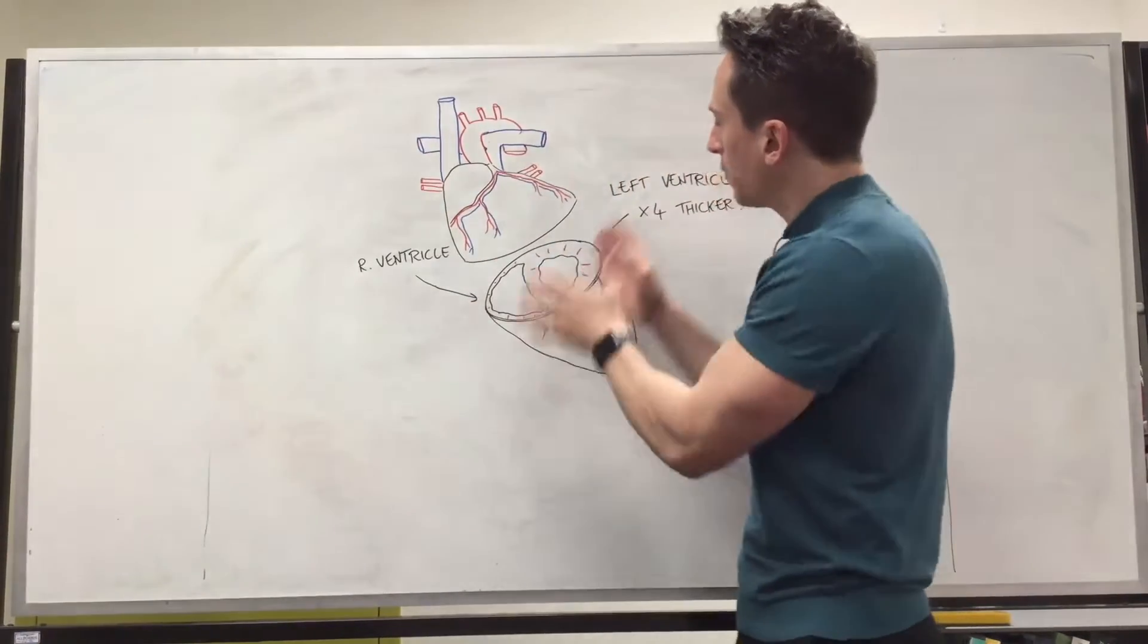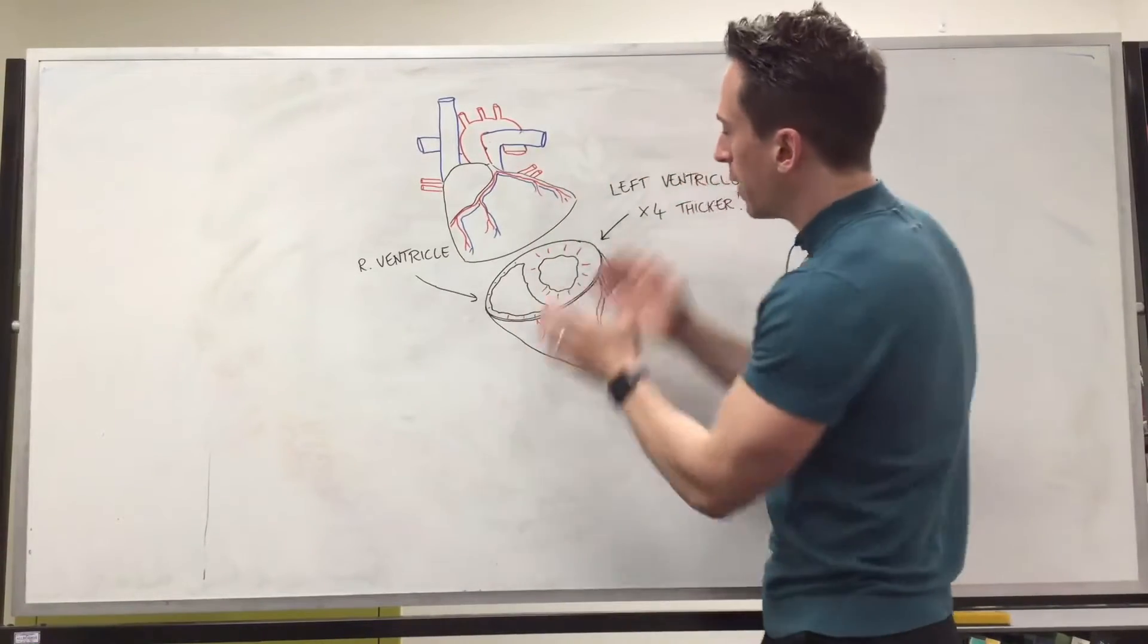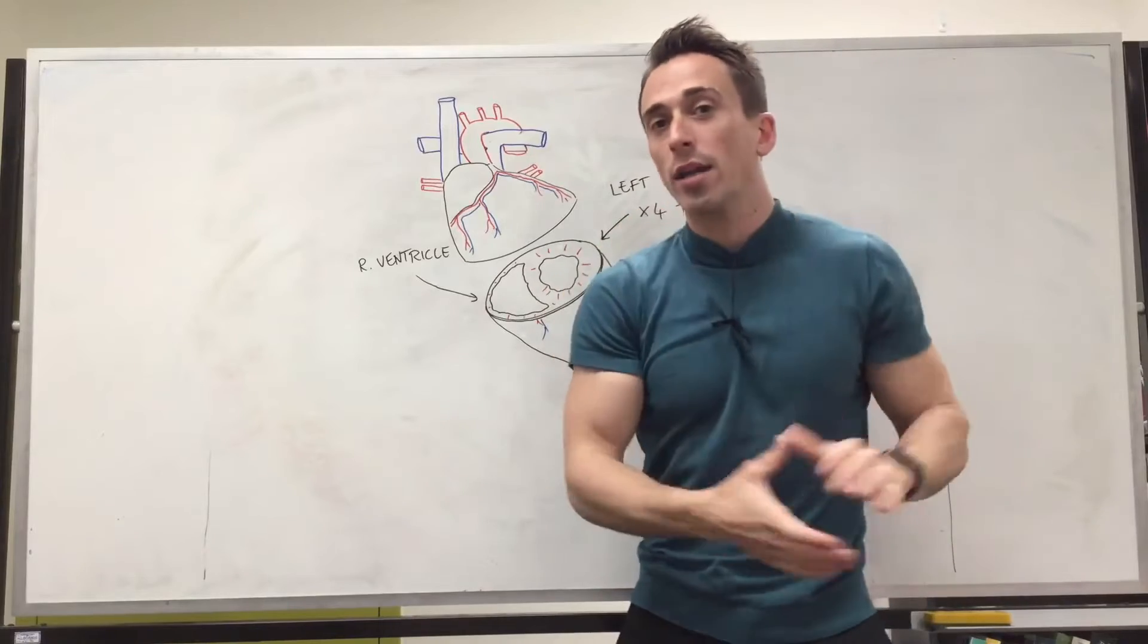Now what you can see here is the left ventricle and the right ventricle myocardium, heart muscle, varies in thickness. Now the question is why do they vary in thickness?